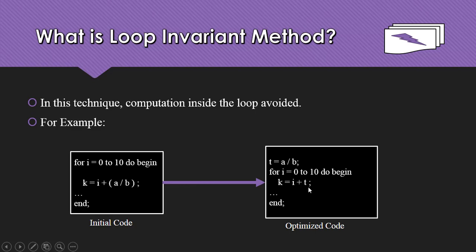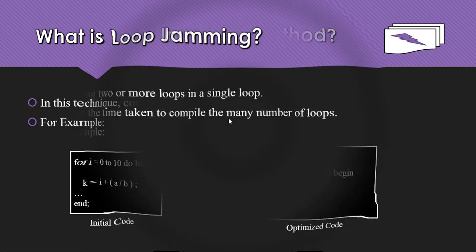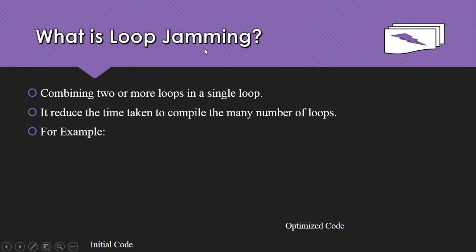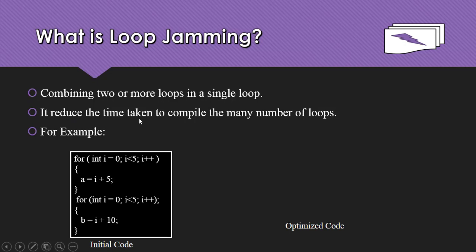What is loop jamming? In loop jamming, if your program has two or more loops, we merge them into a single loop. This reduces the time taken by the compiler to handle many loops.